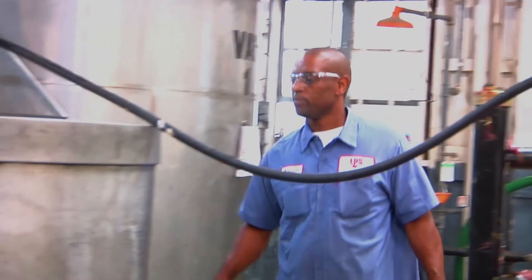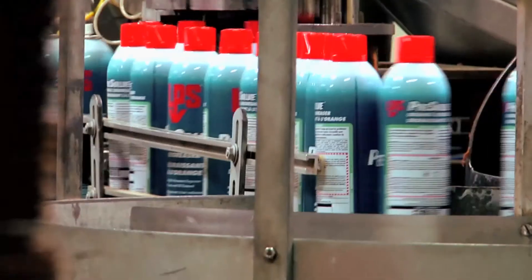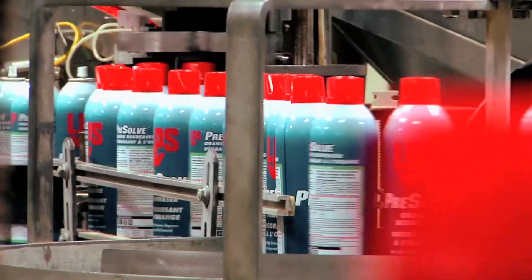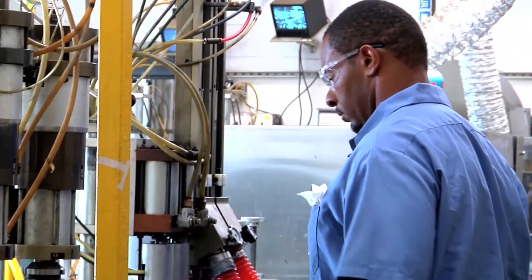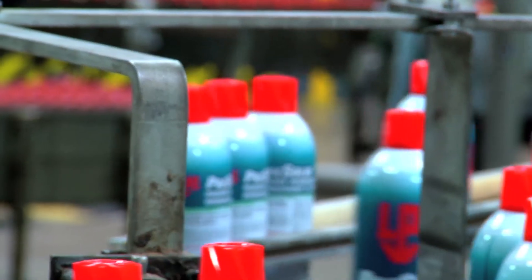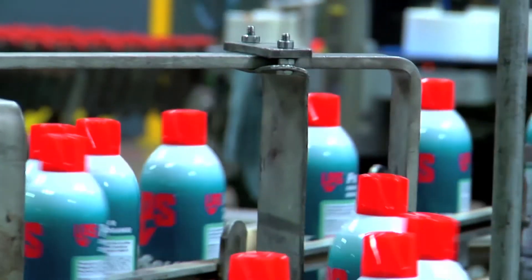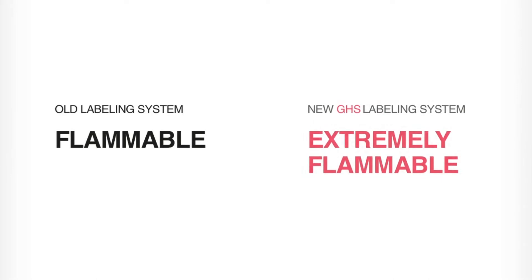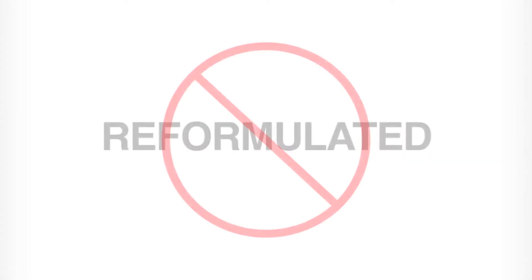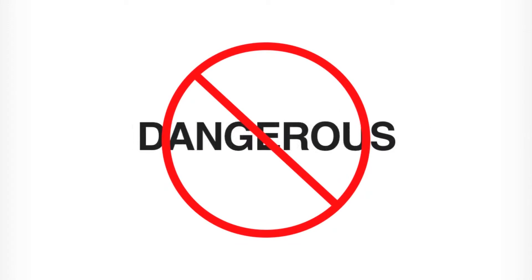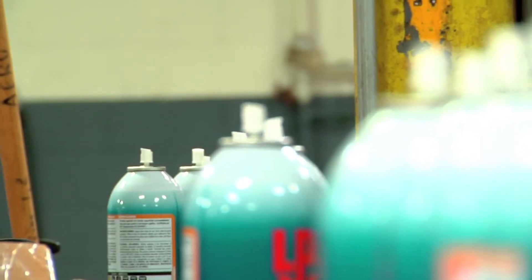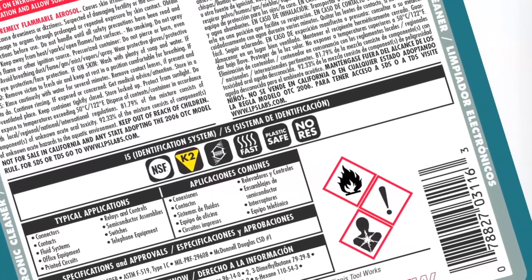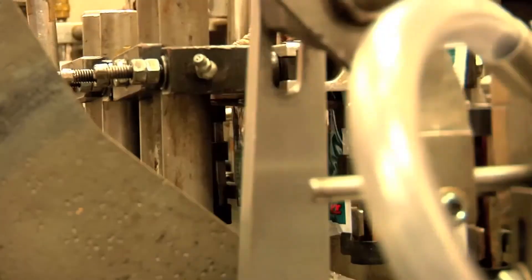Specific criteria will be used to classify chemicals and mixtures. In some cases, employees will see no difference in how a chemical product is classified. In other cases, the product will appear to be more hazardous than it used to be. For example, a product that was labeled flammable under the old system may be labeled extremely flammable under the new system. This will not necessarily mean the product has been reformulated or has become more dangerous — new label warnings may be required solely based on the different classification criteria, not because of any changes to the actual product.